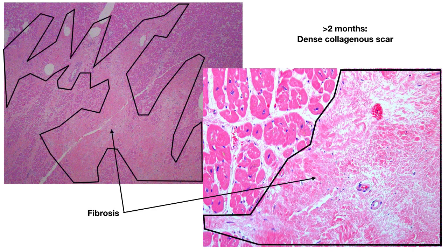What we see here is basically a dense collagenous scar. The left side is lower power and the right side is higher power, closer up. You can see just dense collagen and dense fibrosis — it would stain blue with trichrome, and there is hardly any cellularity to it. This is what you would see at greater than 2 months: a dense collagenous scar.